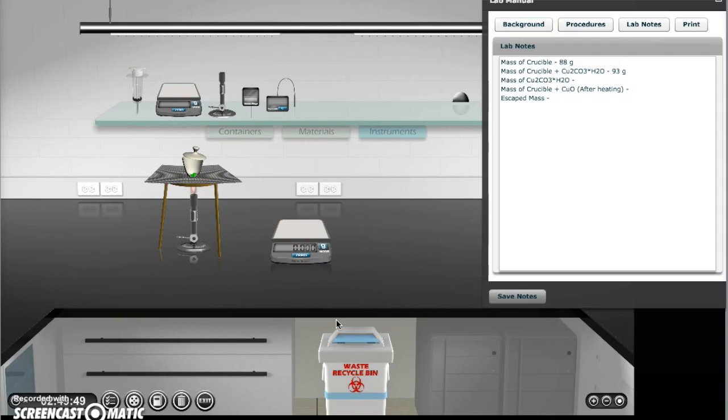As the crucible is being heated, watch for a color change and escaping gas. Once this occurs and finishes, turn off the Bunsen burner and drag the crucible back onto the scale. Record its new mass and then click and drag all instruments and materials to the waste recycle bin.